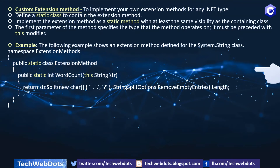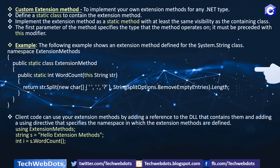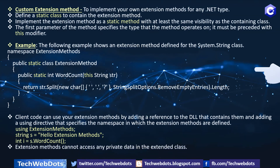The next thing is how to call them. Client code can use your extension methods by adding a reference to the DLL — if you have created your extension method in a class library, it will generate a DLL — and adding a using directive that specifies the namespace in which the extension methods are defined. So we use the 'using' keyword and import the namespace 'ExtensionMethods' which we created earlier. Then we create a string and call s.WordCount, which will return the number of words in the string. One more important thing: extension methods cannot access any private data in the extended class, so we don't need to worry about security in the available class.